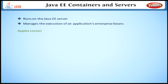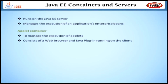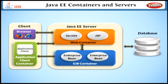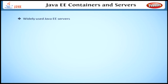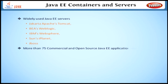The last one is the applet container. This container is used to manage the execution of applets. It consists of a web browser and Java plugin running on the client. Let's look at the picture showing the Java EE server and the containers. Here we are able to see the application client container, web container, and EJB container. Now you have a basic idea about the Java EE server and the various containers. The widely used Java EE servers in enterprise application development are Apache's Tomcat, BEA's WebLogic, IBM's WebSphere, Sun's iPlanet, and JBoss. Each and every one has many special characteristics. Other than these, there are more than 75 commercial and open source Java EE application servers available for use.